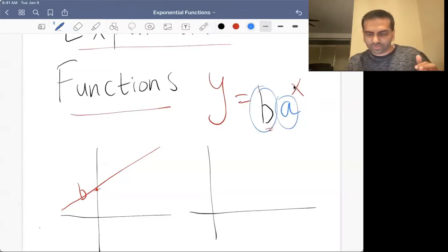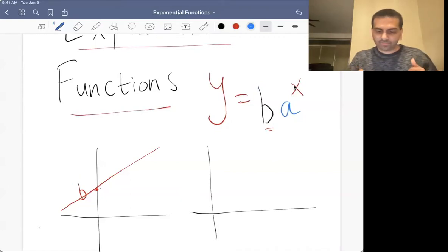Some instructors switch these, but for me personally, just because b is the initial value for lines, we're used to that, I'm going to use the same notation here. So b is the initial value, but it's growing now by the same percentage instead of the same amount.